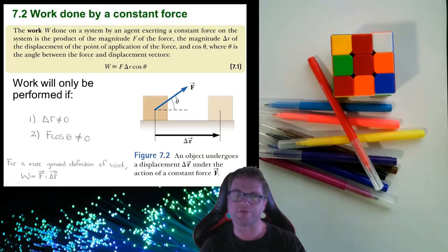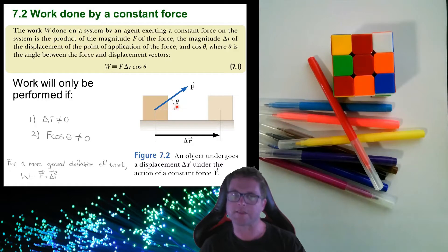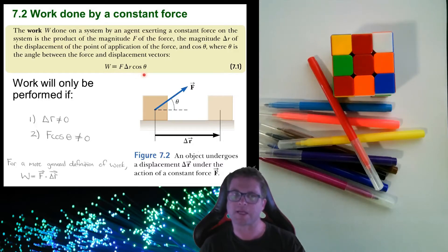Starting with the definition of work: we have a block with a force of magnitude F causing it to move a distance delta r. There's also an angle theta between the force and the displacement direction. Under these conditions, work is defined as force times displacement times cos of theta.